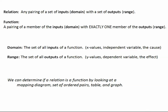Let's begin with some important vocabulary. A relation is any pairing of a set of inputs — also called the domain — with a set of outputs, which can be called the range. Versus a function, which is a pairing of a member of the inputs, or domain, with exactly one member of the outputs, or the range.